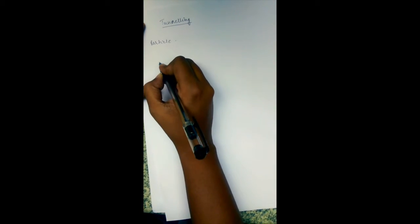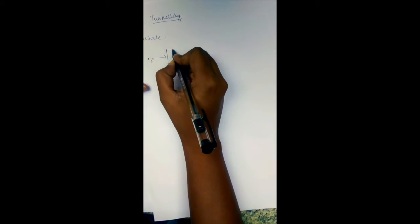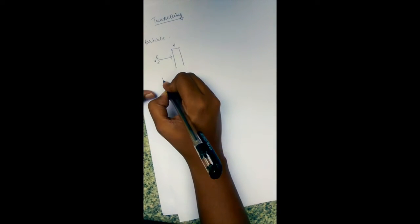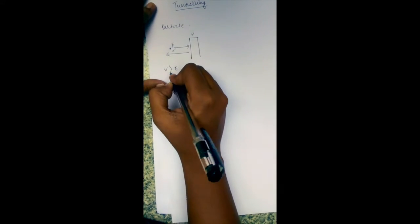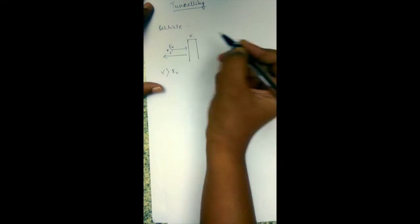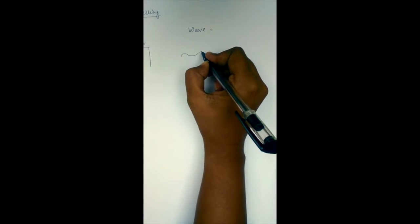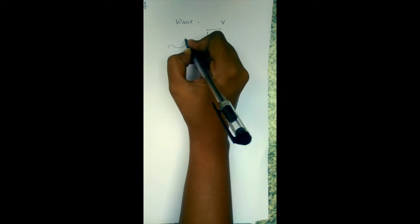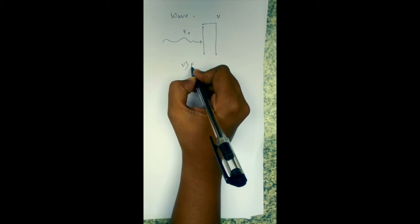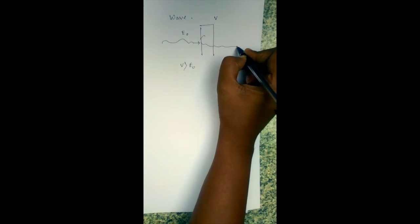When a particle such as an electron behaves as a particle and hits a barrier having greater potential than itself, it will immediately be reflected back — that is, when V is greater than E0. But when we consider an electron as a wave, even when it encounters a barrier where V is greater than E0, it will be able to pass through and tunnel through this barrier.